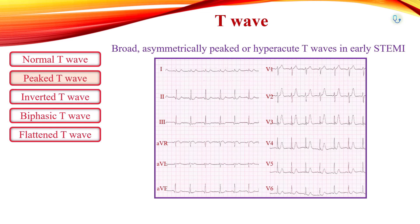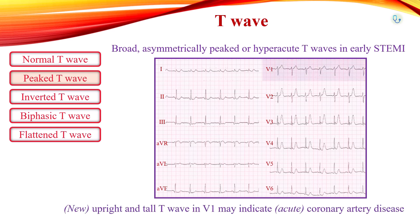The normal T-wave in V1 is inverted. Although an upright T-wave in V1 can be a normal variant, a new upright and tall T-wave in V1 is considered abnormal. This finding indicates a high likelihood of coronary artery disease.